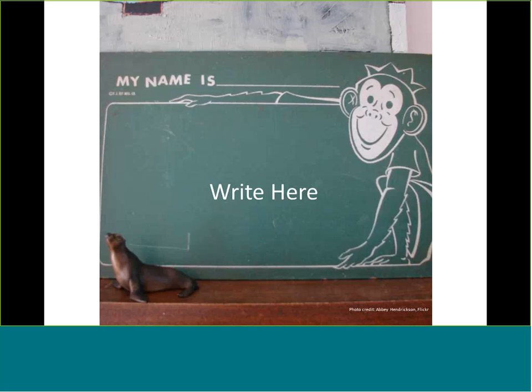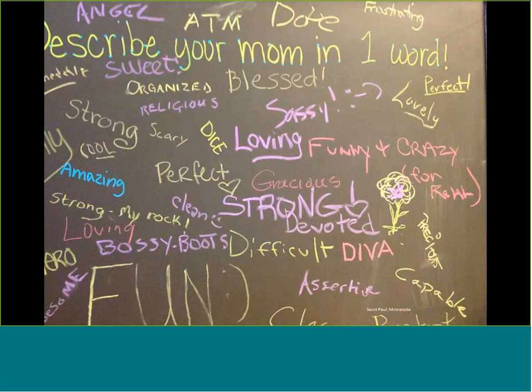We'd love to hear what's working for your libraries — chalkboard, dry erase, markers, writing on windows, post-its. Here's a beautiful example from St. Paul: they gave kids a prompt to describe their mom in one word. Kids wrote things like 'bossy boots,' 'difficult,' 'assertive,' and 'diva.' You're getting the unfiltered truths, and that's what you're looking for. These simple tools all share a few common aspects — most importantly, they're playful.